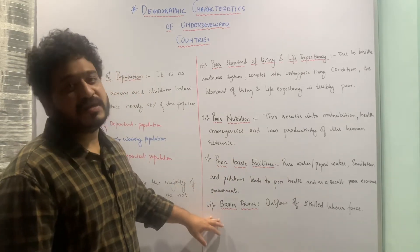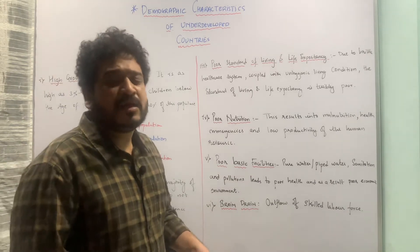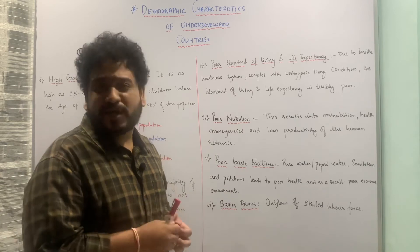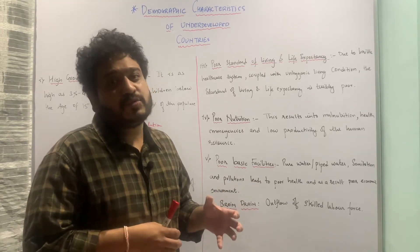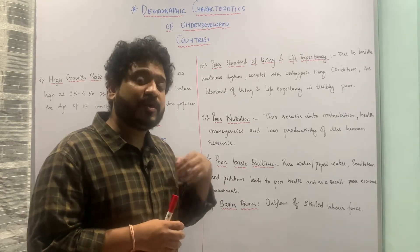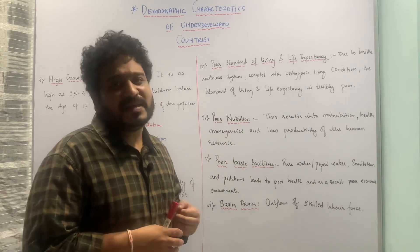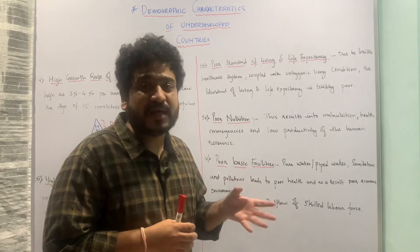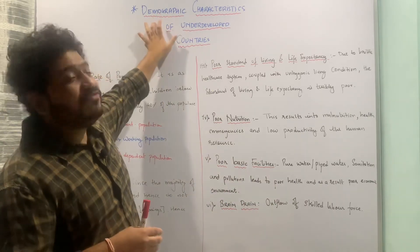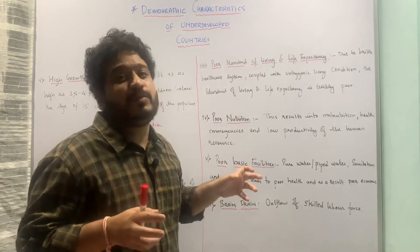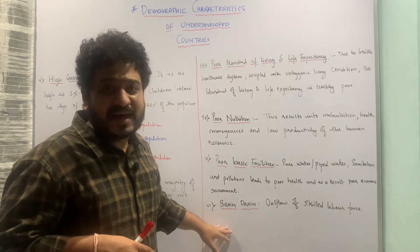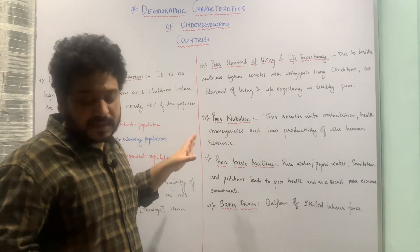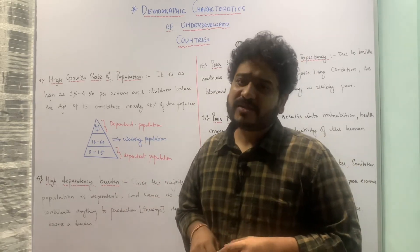Finally, an important demographic characteristic of developing economies is brain drain — the outflow of skilled labor. When skilled labor receives education in the domestic country and then leaves just to earn better wages elsewhere, they contribute to the betterment of another country. Although they may send some remittances back home, they are primarily contributing to the development of the economy where they work. This means economies lose their most talented and skilled individuals, putting them on the losing side. Brain drain is therefore a key demographic characteristic of developing or underdeveloped countries.